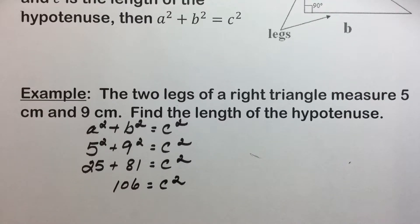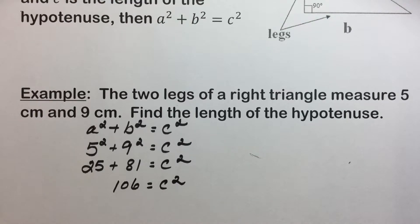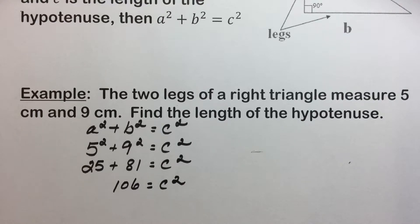We can now use the fact that if something squared equals a number, then that number — in this case C — is equal to either the square root of that number or the opposite of that square root. In this case, since C is a length, we will use the positive square root.